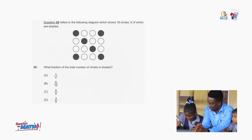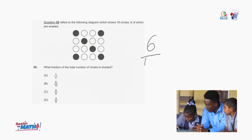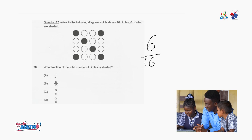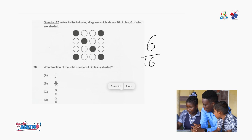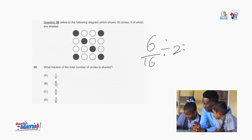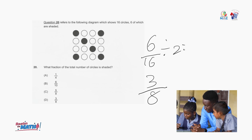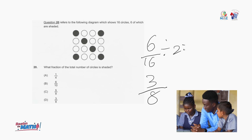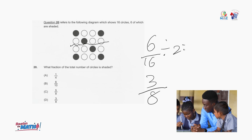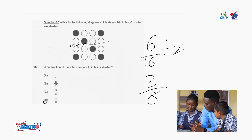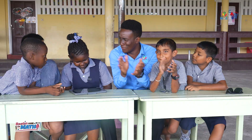So there are 16 and 6 are already shaded, so 6 over 16. You want to reduce it — how do you reduce it? Divide by 2. So 2 into 6 is 3, and 2 into 16 is 8. So we get 3 over 8 — 3 is shaded out of 8. The answer is D. Very good! What do you think — you beat the maths or the maths beat you? I beat the maths!